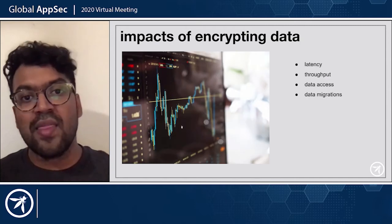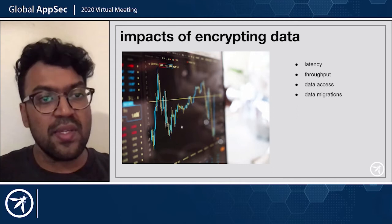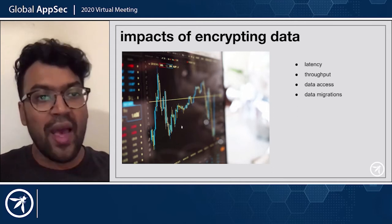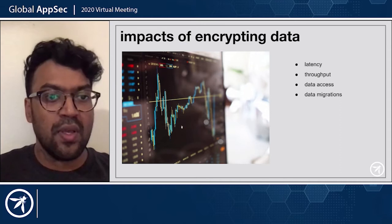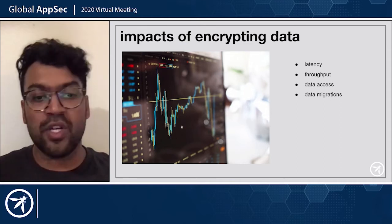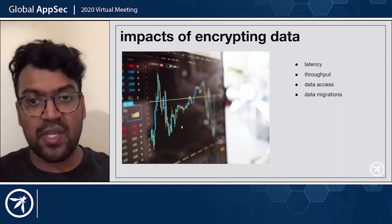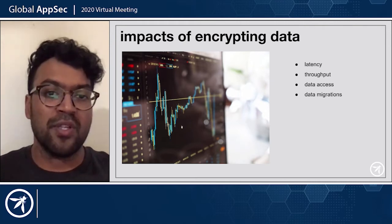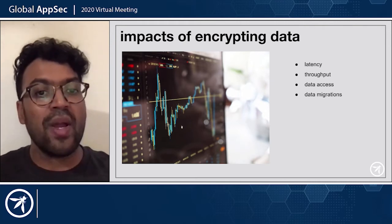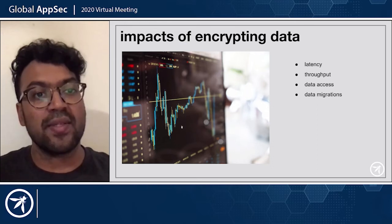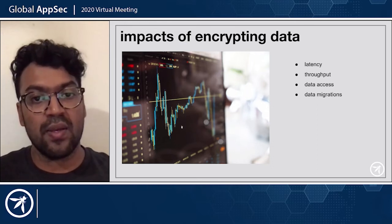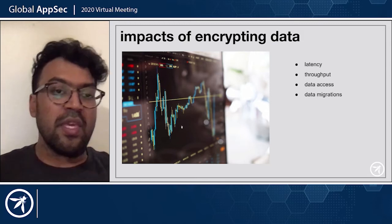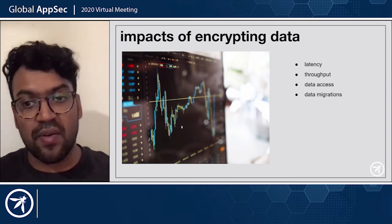So we said that encryption is kind of easy — it's relatively straightforward. When you're going to do encryption, you pick a good algorithm, you pick the proper key size, the nonce size, and some other parameters, and you just encrypt that data. But what happens after that? What are the impacts of encrypting data? Some impacts have to do with performance, and some have to do with the actual data itself.